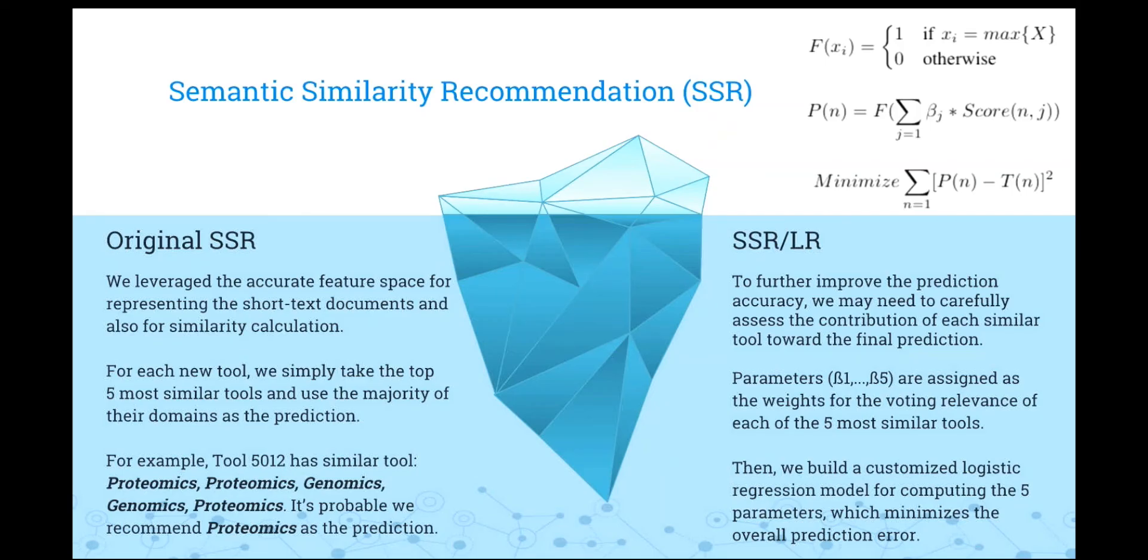We first got our original SSR. We leveraged the accurate feature space for representing the short text documents and also for similarity calculation. And for each tool, we can get five most similar tools and use the majority of their domains as a prediction. This is kind of voting. For example, the tool ID 5012 has similar tools: proteomics, proteomics, genomics, genomics, and proteomics. So it's very probable we recommend proteomics as a prediction.